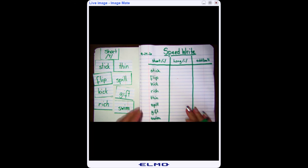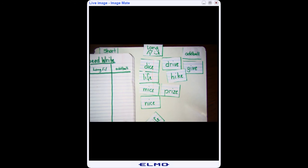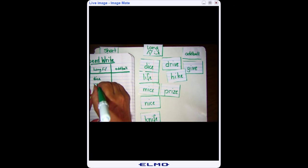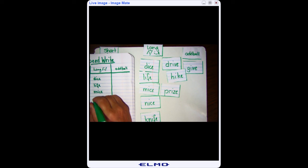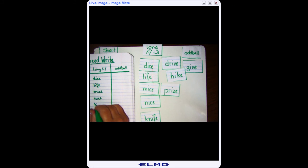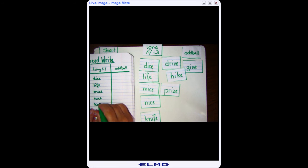All right. Moving my paper over. Long I: dice, life, mice, nice. Mice and nice almost look the same. Knife. There's that silent K. Drive. Hike. Prize.